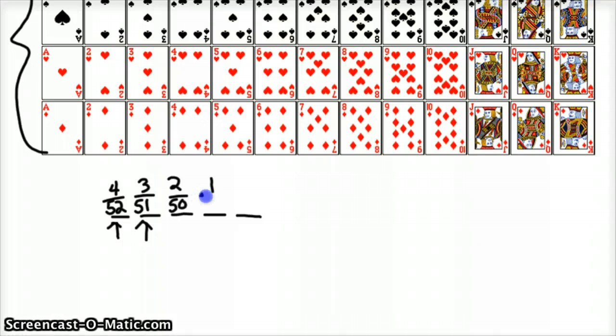Times one out of 49. Then we get to the last card. These first four for me, this would be the chance of my first four cards being an ace. So four out of 52 times three out of 51 times two out of 50 times one out of 49.